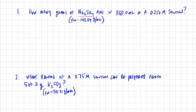Welcome back. As promised, we're going to work on a few molarity, molality, and weight percent calculations. Let's jump right into it. Number one: how many grams of sodium sulfate (Na₂SO₄) are in 350.0 milliliters of a 0.250 molar solution?